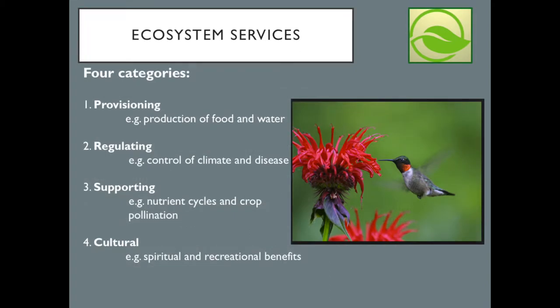We categorize ecosystem services into four categories: provisioning, which for example might be the production of food and water; regulating, for example the control of climate and disease; supporting, for example nutrient cycles and crop pollination; and finally cultural — the spiritual and recreational benefits humans receive.